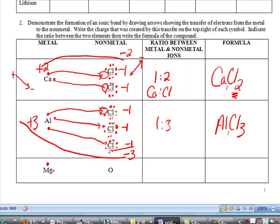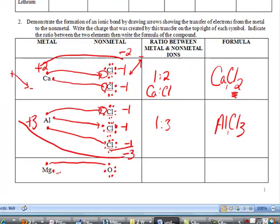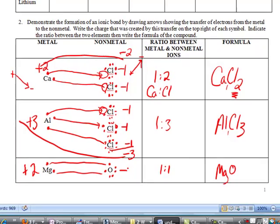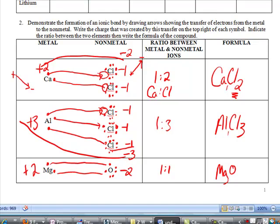Notice magnesium here. Plus 2. Oxygen's in group 6. So it's missing 2. Isn't that nice? Magnesium puts 1 there, puts 1 there. A 1 to 1 ratio. And it's MgO. 1 to 1 ratio. Even though this is plus 2, negative 2. As long as the numbers cancel each other out, then it's always a 1 to 1 ratio. Alright, you do the rest. There's some more on the back.